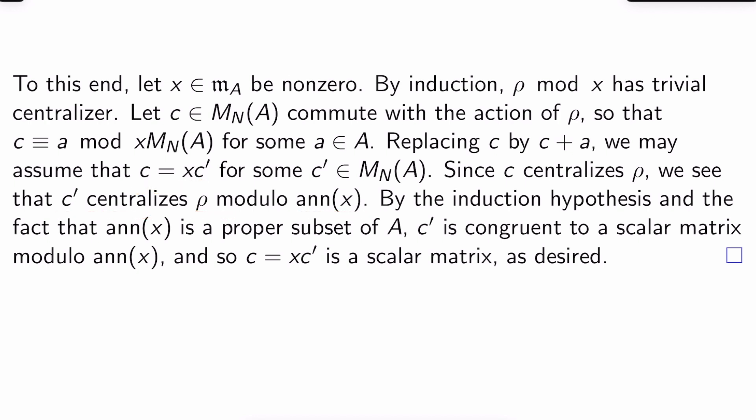But then by the induction hypothesis and the fact that the annihilator of X is actually a proper subset of A, C′ is congruent to a scalar matrix mod the annihilator of X. In other words, C equals XC′ is a scalar matrix. That's what we're trying to prove though. And so there's the proof of Ramakrishna's theorem.